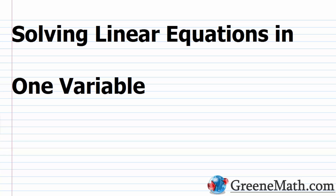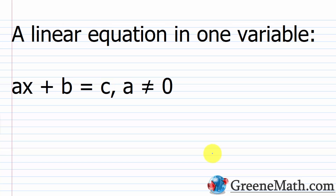In this lesson, we want to review solving linear equations in one variable. Over the course of the last two lessons, we reviewed the addition property of equality along with the multiplication property of equality, and we looked at how to solve some single-step equations. Towards the end of the last lesson, we looked at some things that were a little bit more complex. But in this lesson, we want to put everything together and show a four-step method that will enable us to solve any linear equation in one variable.